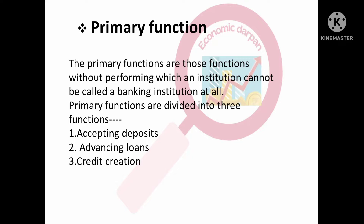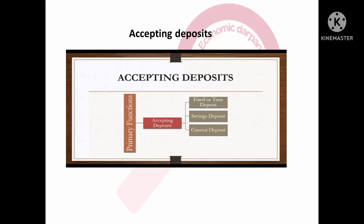The first primary function is accepting deposits. A bank can only operate if money comes in. Commercial banks accept deposits from their customers — from households in the form of fixed deposits, time deposits, or savings deposits, and from businessmen in the form of current deposits.